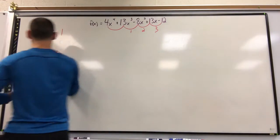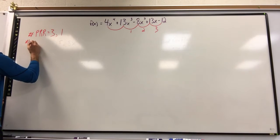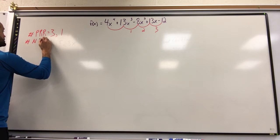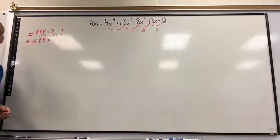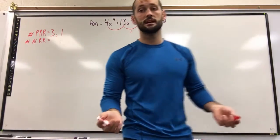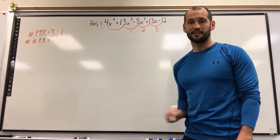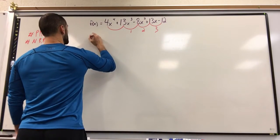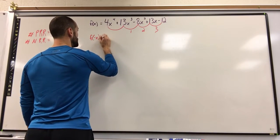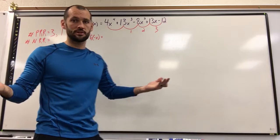Now we have to find the number of potential negative real roots, hashtag NRR. Now for this, you have to find f of negative x. So that's what we're going to do. Because I'm only looking for the signs, I don't care about the coefficients. I look at the signs.